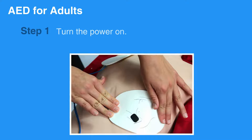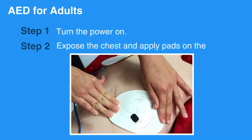First, turn the power on. Expose the chest and apply pads on the victim. If they have a medication patch on their chest, remove it before applying the AED pads. If there's a bulge under the skin of their chest, a pacemaker may be present. Avoid placing the AED over the pacemaker and adjust placement accordingly.